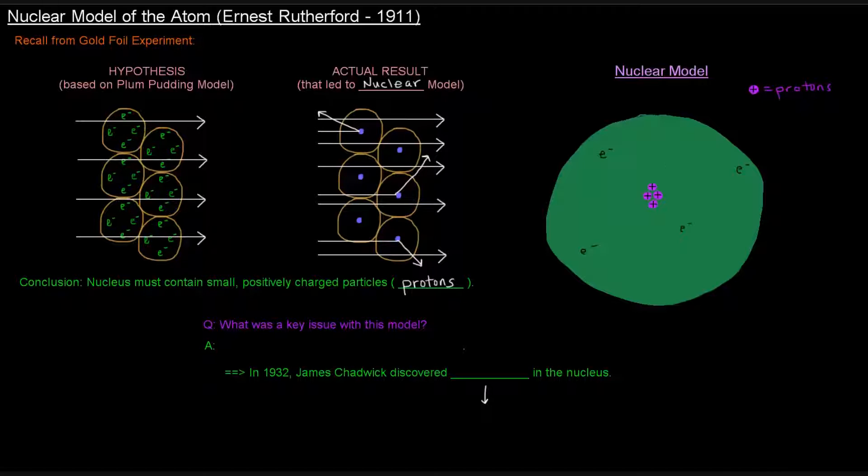So the nuclear model kind of looks like this, where this green space kind of shows the area where the electrons can hang out and the center here we've got the protons in the nucleus of the atom, right? So this here is the nucleus.